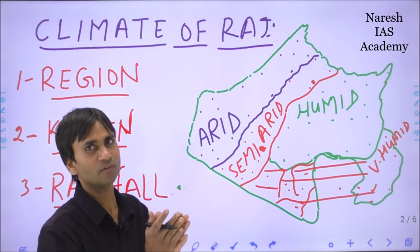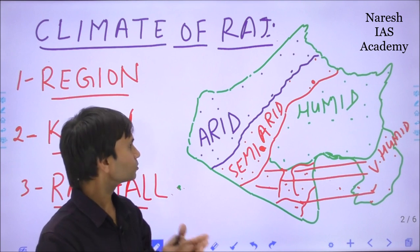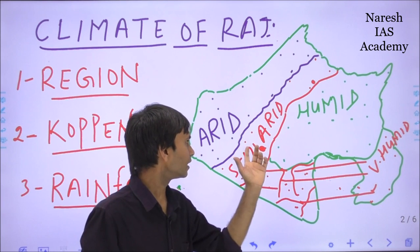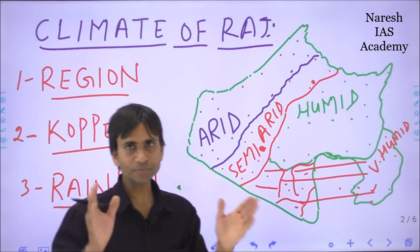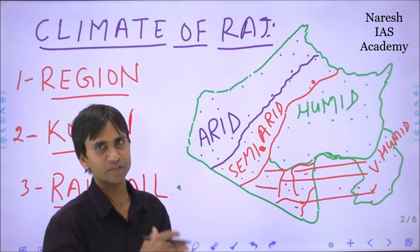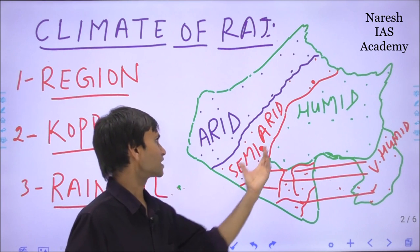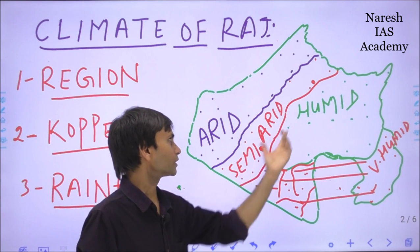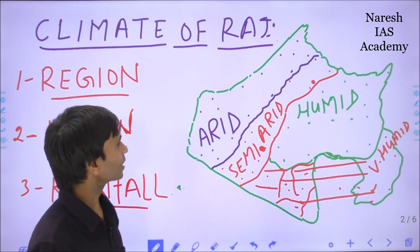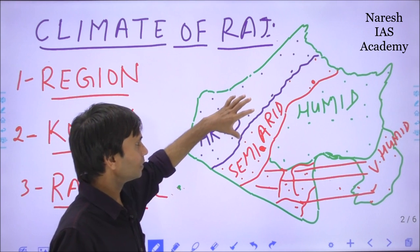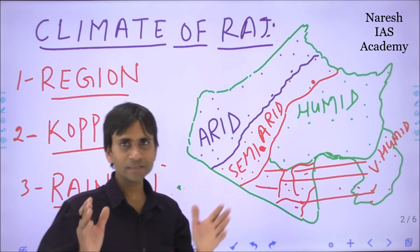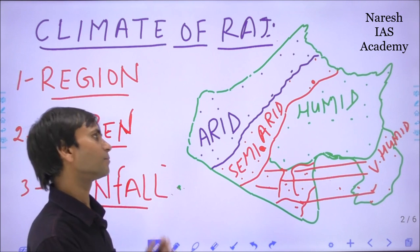The percentage of rainfall in the semi-arid region is much more than the arid region. Sometimes the semi-arid region receives rainfall of about 60 centimetres, with the annual range between 40 to 60 centimetres. That is why we can see some biodiversity, greenery, and human settlement in this region.